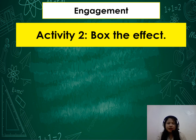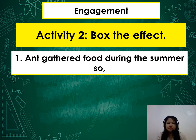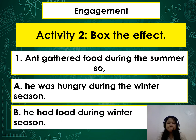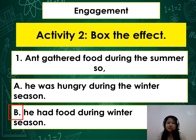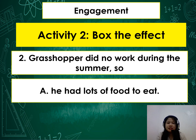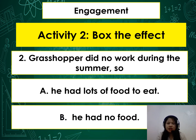Now box the effect. Number 1: The ant gathered food during the summer. So — A, he was hungry during the winter season; or B, he had food during the winter season. Number 2: The grasshopper did no work during the summer. So — A, he had lots of food to eat; or B, he had no food.